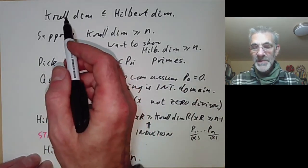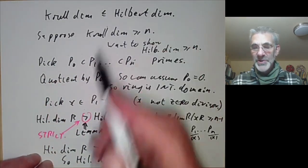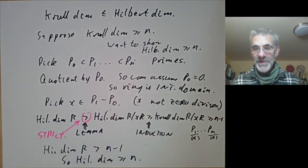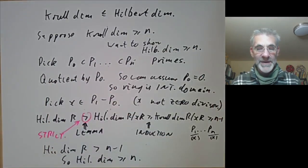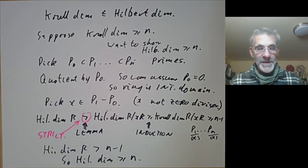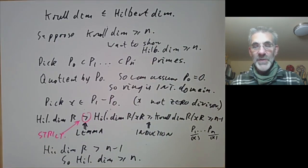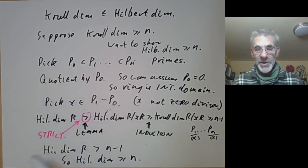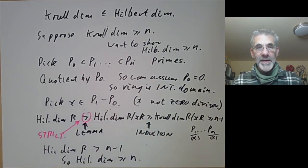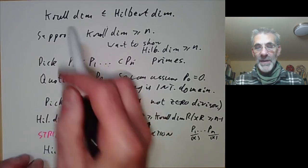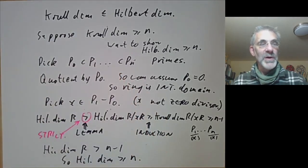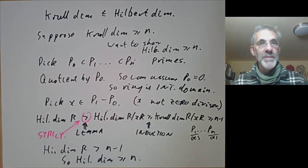This shows that the Krull dimension is at most the Hilbert dimension. In the next lecture we will complete the proof by showing that the dimension defined by a system of parameters is at most the Krull dimension, which will establish that all three notions of dimension coincide.